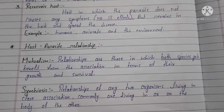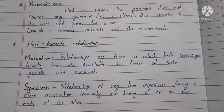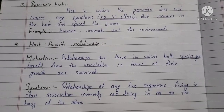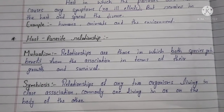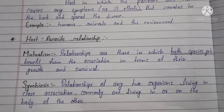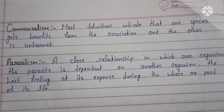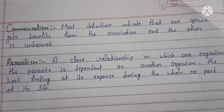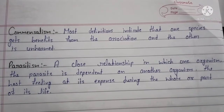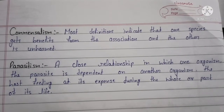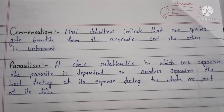Now we will discuss host-parasite relationships. First, mutualism: relationships in which both species get benefit from the association in terms of their growth and survival. Second, symbiosis: a relationship of any two organisms living in close association, commonly one living in or on the body of the other. Third, commensalism: one species gets benefit from the association and the other is unharmed. Fourth, parasitism: a close relationship in which one organism, the parasite, is dependent on another organism, the host, feeding at its expense during the whole or part of its life.